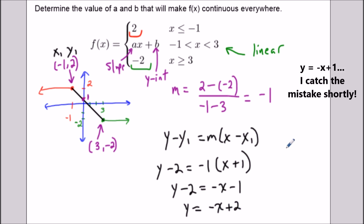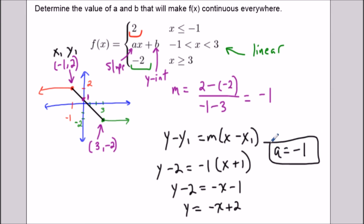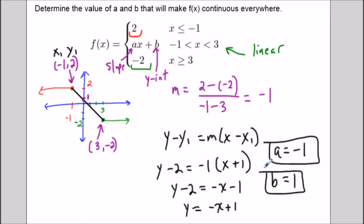Solving for y, we get negative x plus two, so the y-intercept looks like two. Let me catch a small mistake here — adding two on both sides gives us negative x plus one, so the y-intercept is positive one. This shows how drawing it out can tell you what neighborhood your answer has to be in, so if you make a small computational mistake you can catch it.